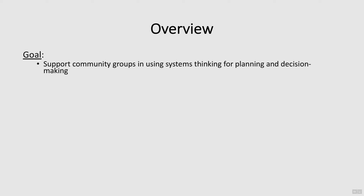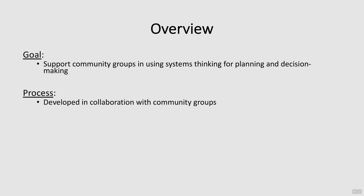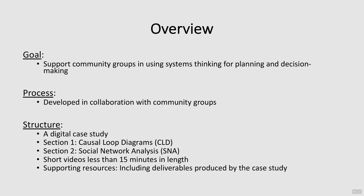The goal of this training kit is to support community groups in using systems thinking to address complex problems. The training kit was developed in collaboration with community members and is presented as a digital case study. The case study demonstrates these tools and how they can be applied by a community group to a complex problem to inform strategic planning. The training package will guide you through the various steps using causal loop diagrams in the first section and social network analysis in the second section. Included is an overview of the two systems tools and deliverables produced by the community groups at various stages. The training is divided into short videos no more than 15 minutes in length, and also includes a supporting resources section with PDFs of deliverables and additional reading options.